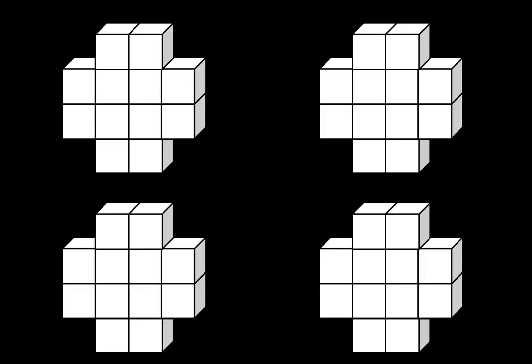Let's continue by seeing how some people break this structure apart. Here are four copies of the structure. One way that some people break this apart is by seeing a group in the middle and also groups of two around the outside.